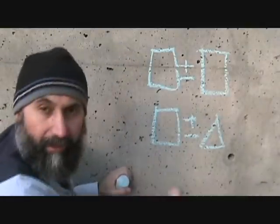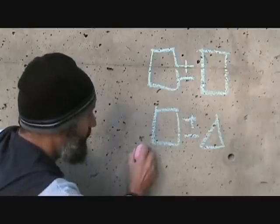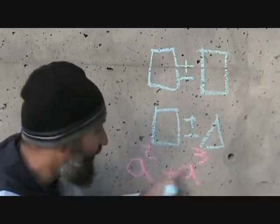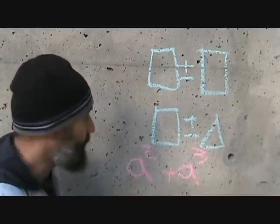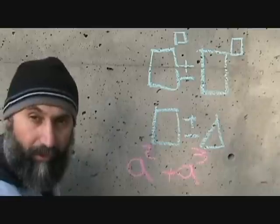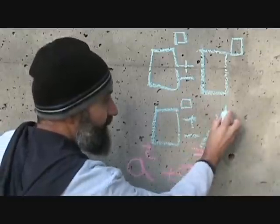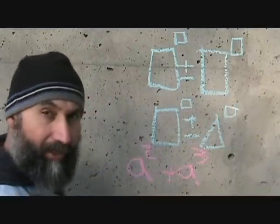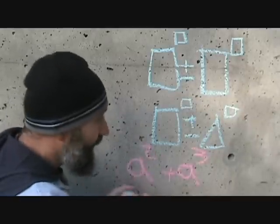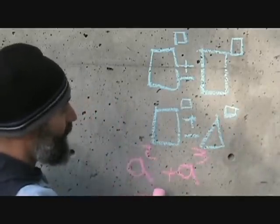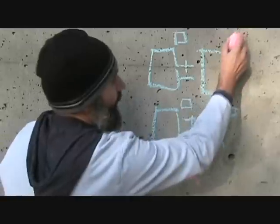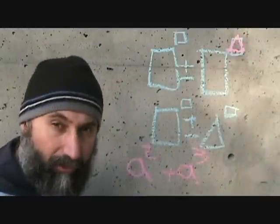If you have a to the power of 2 plus a to the power of 3, you can't add those because they're not completely identical. When you're adding and subtracting, the base has to be the same and the exponent has to be the same. So it's irrelevant if both have the same base — if their exponents are not the same, you can't add them. Here we have two things with the same base but different exponents, so they'd be like a square and a triangle — you can't add those.